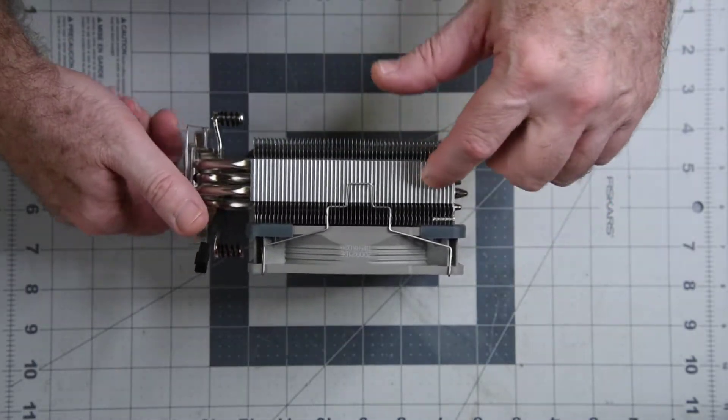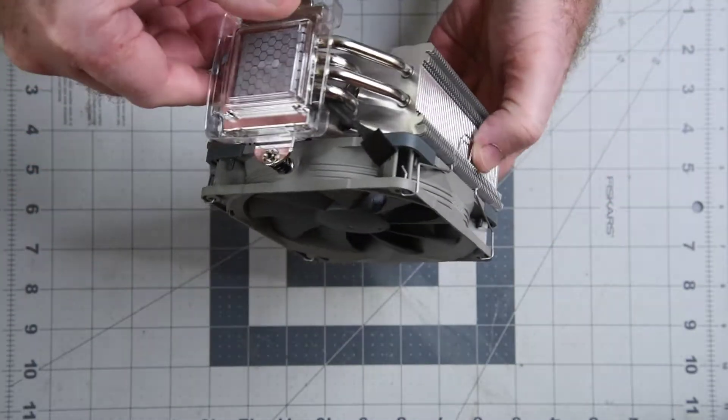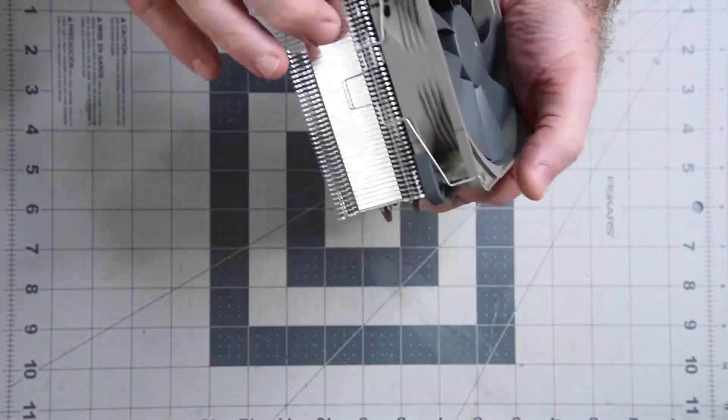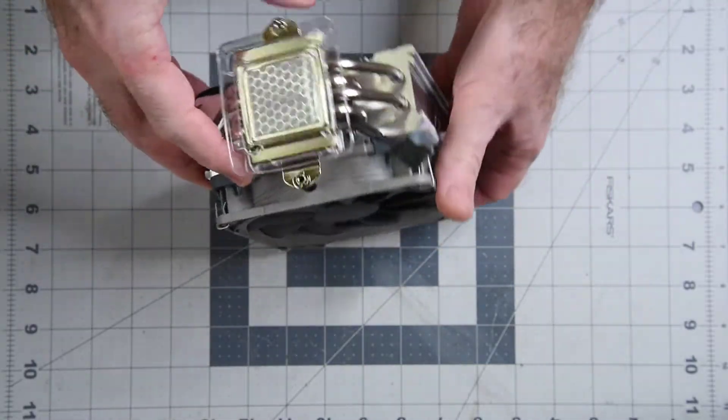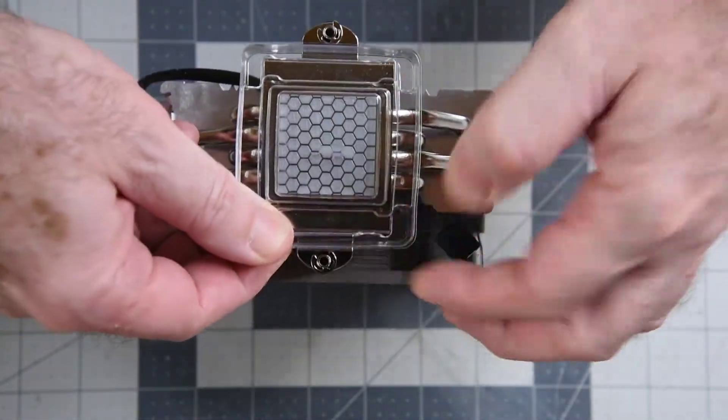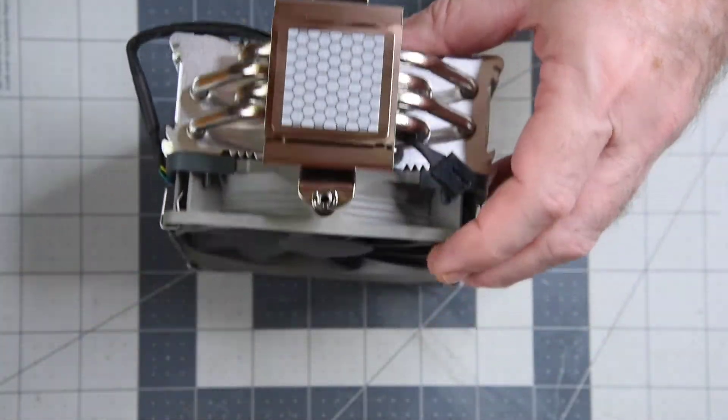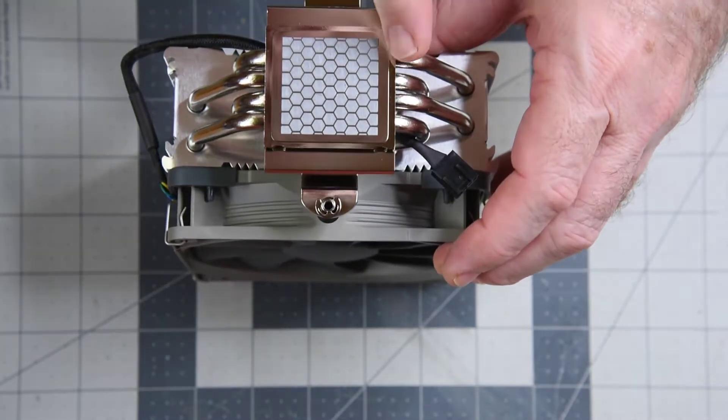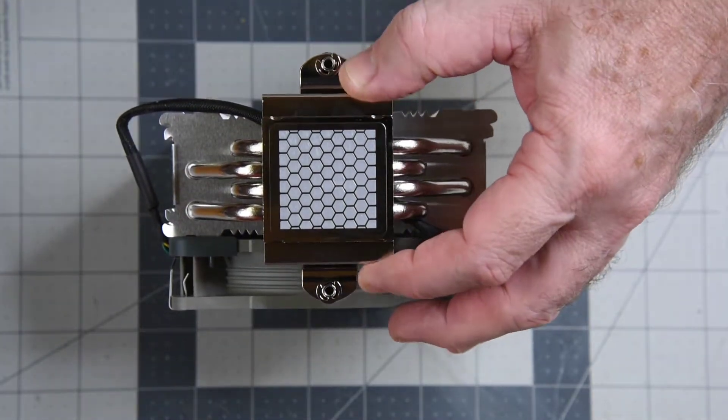I did end up splurging a bit on a test heat sink. I got this Noctua NHU 12S Redux. It does not have directly exposed heat pipes and that will serve me much better in the long run.